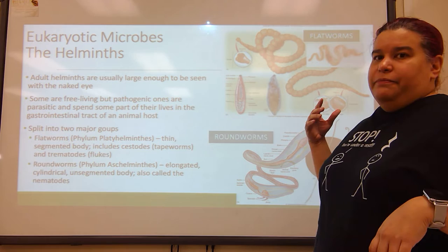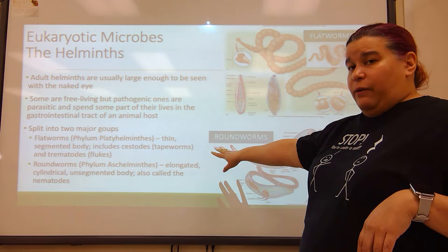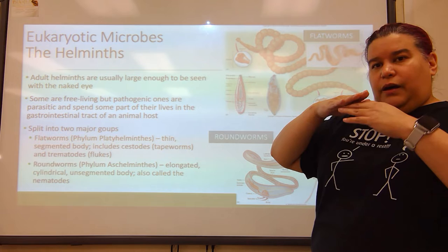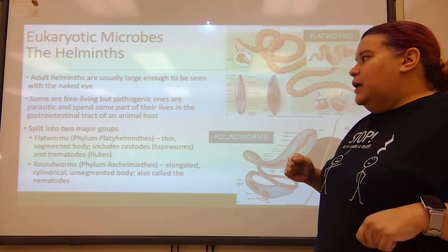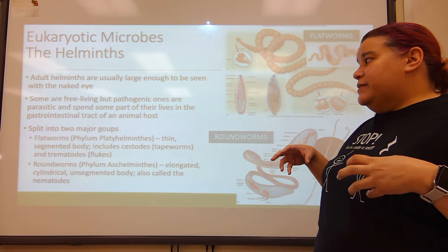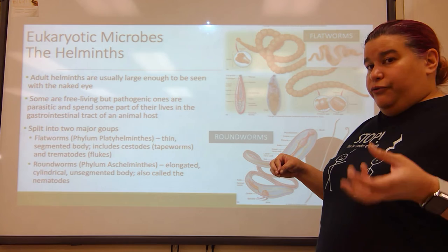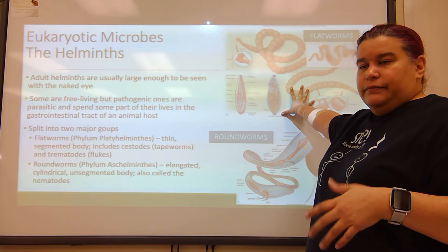You can basically split them into two major groups — the worms. You've got the flatworms, which kind of look like a ribbon in the fact that they're, like the name describes, fairly flat and thin. They have segmented bodies, and they include cestodes, which are tapeworms, and trematodes, which are flukes. The phylum for these is Platyhelminthes.